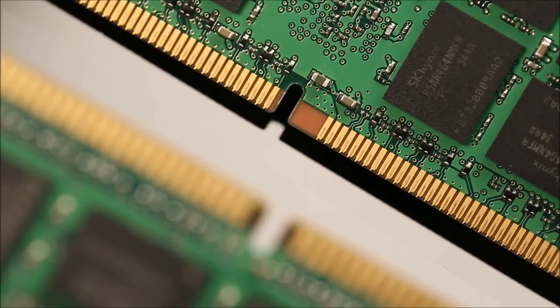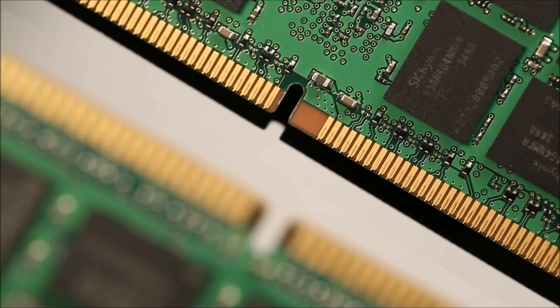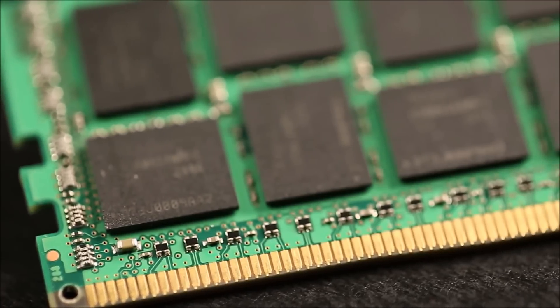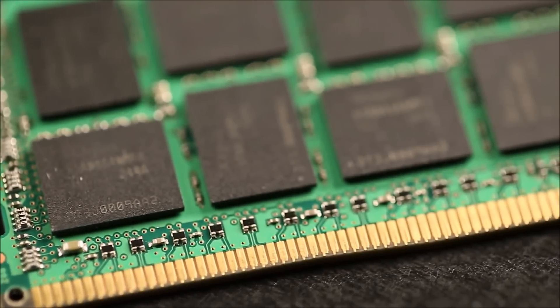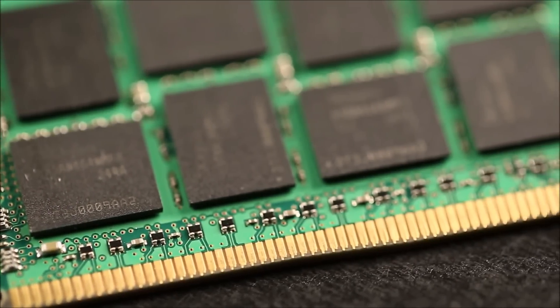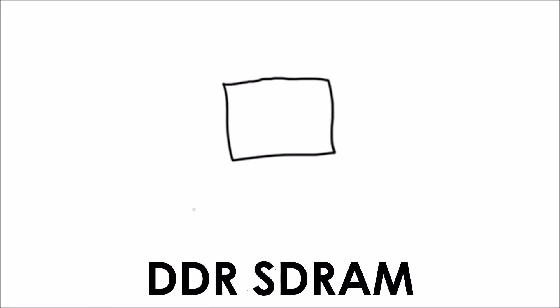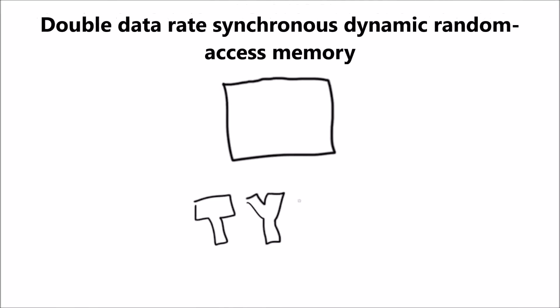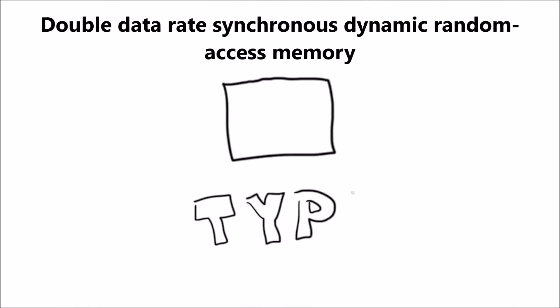For RAM to be applied into a device, it has to be in a circuit or something small and compact. So now we have an even longer acronym: DDR-SDRAM, meaning Double Data Rate Synchronous Dynamic Random Access Memory.